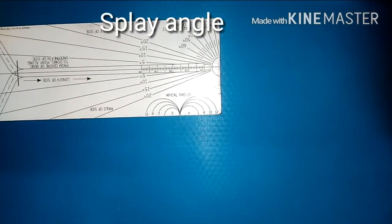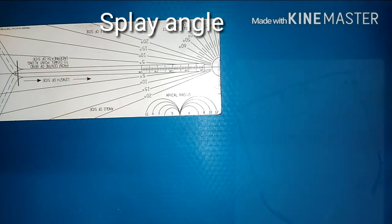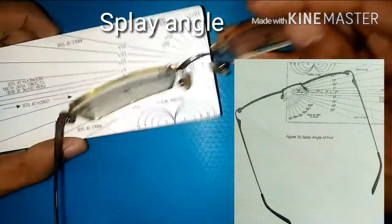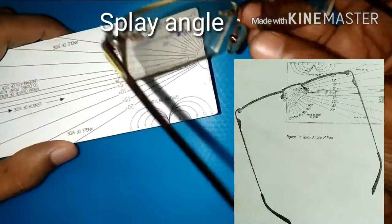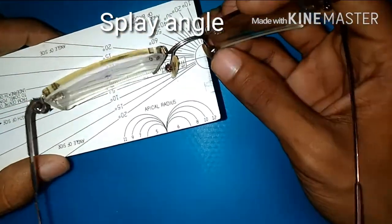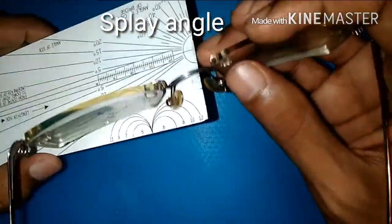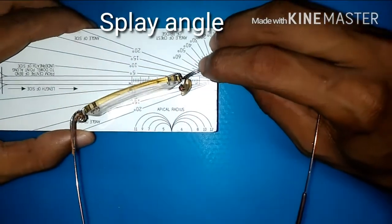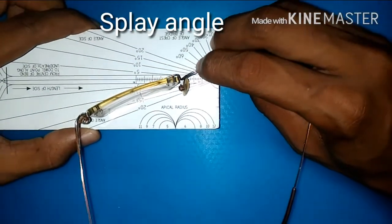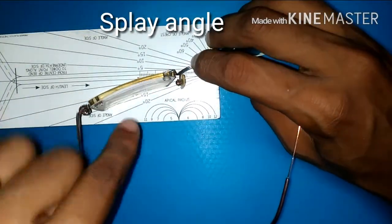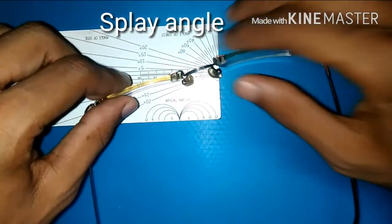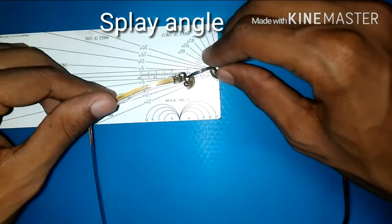The splay angle is the angle between the pad plane and the normal to the back plane. To measure that, place the surface of the pads along the sides of the scale and then try to measure the maximum angle from the inner sides. For this it is around 15 degrees.